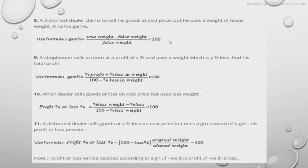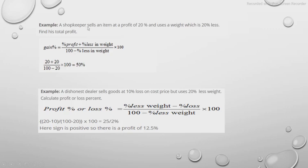The next trick: a shopkeeper sells an item at a profit of X percent and uses a weight which is Y percent less. To find his total gain percent, the formula is: Gain% = (X + Y) / (100 − Y) × 100. This will be better understood with an example: a shopkeeper sells an item at a profit of 20% and uses a weight which is 20% less.